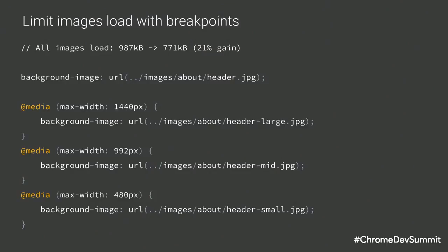As for the hero image, it covers the full header area, so it needs to be as big as the viewport, but it doesn't need to be bigger than that. So I just created a few versions of that file that are appropriate for a smaller viewport, added a few breakpoints to my CSS, and with these few lines of code — bam — I got 21% less image data downloaded on the medium-sized page. That's a huge impact for a single optimization like this.